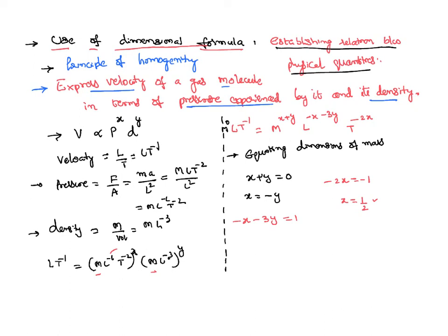In fact, I need not solve this equation at all. Why? Because I already got x = -y, so y = -x, which is nothing but equal to -1/2. So I can directly substitute. Even if it is solved, you will be getting the same.